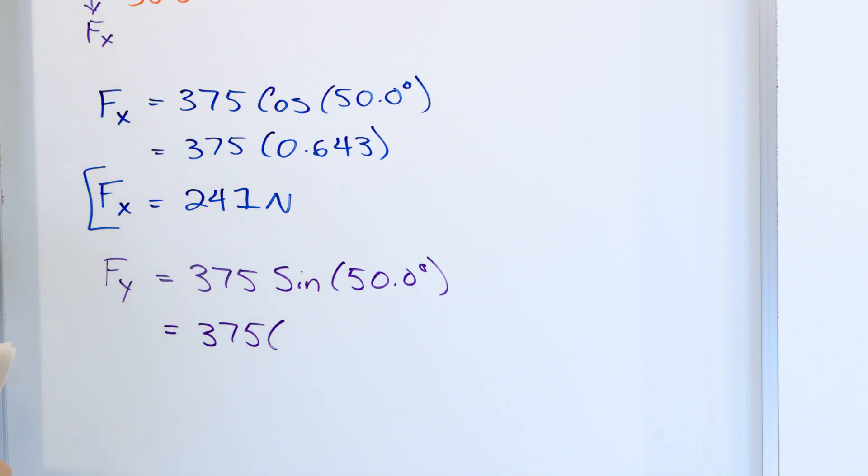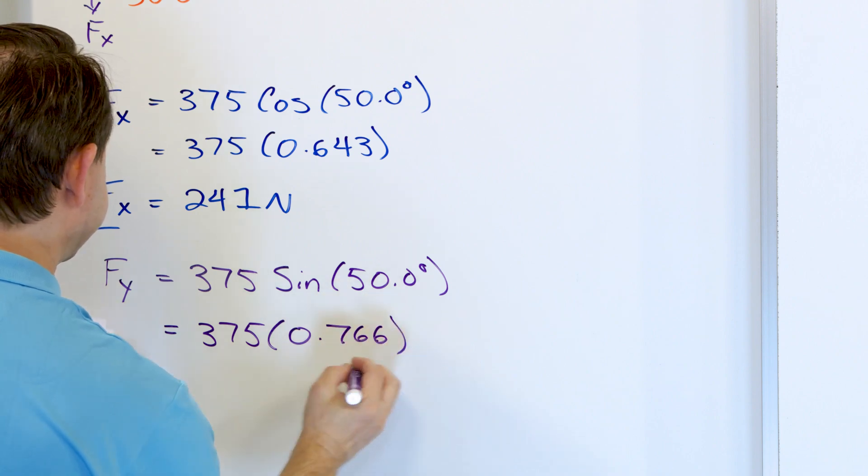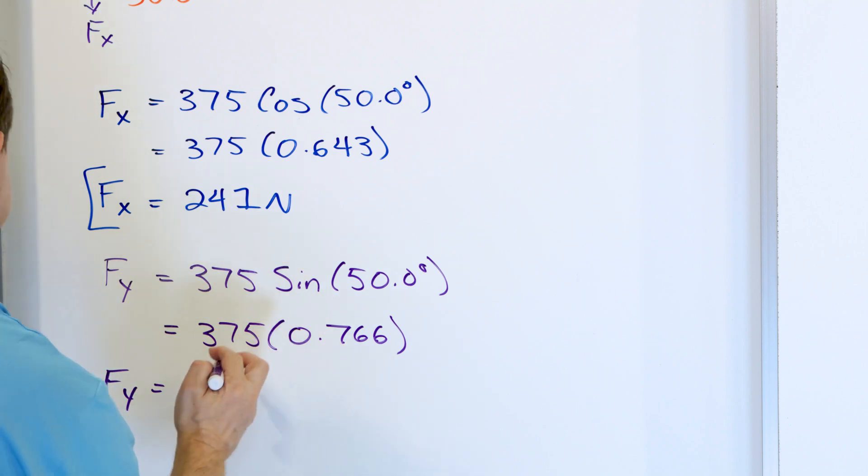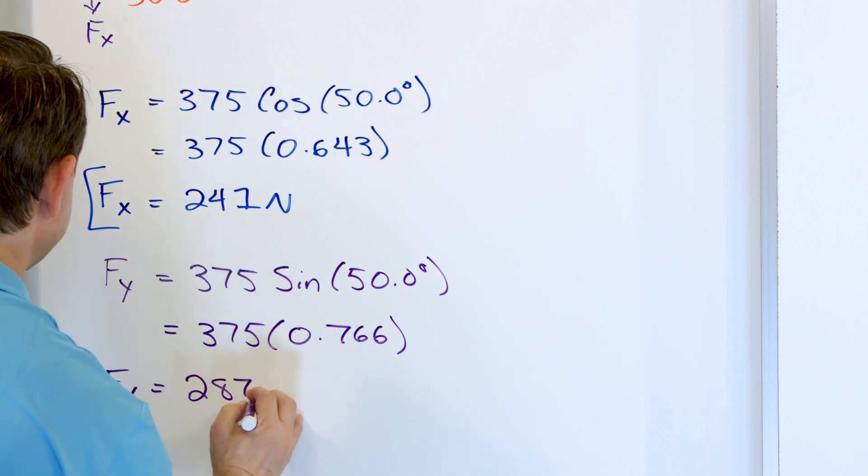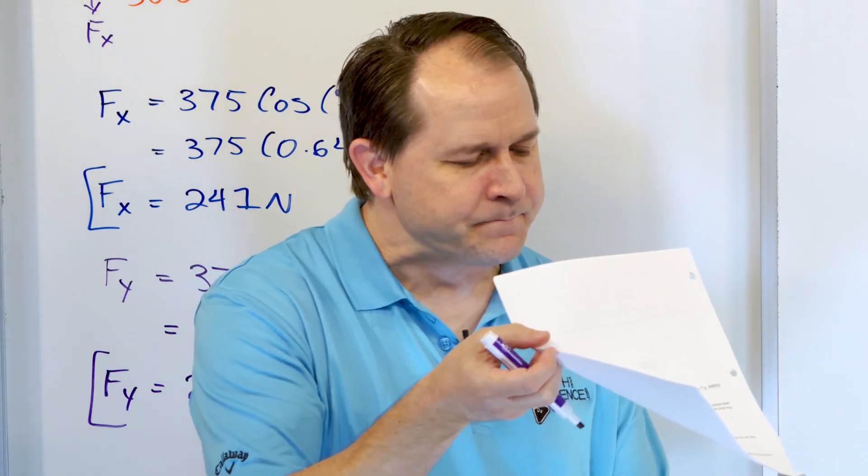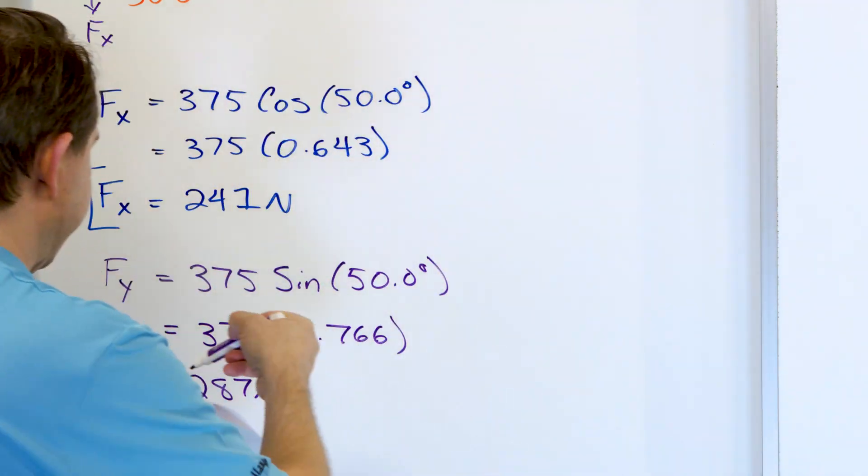And then what's the sine of 50 degrees? 0.766. And so F sub Y, when we take 375 times 0.766, we get 287 newtons. And this is the vertical component. So this is the answer to the problem because the problem just said, find the horizontal and vertical components of F. And here it is.